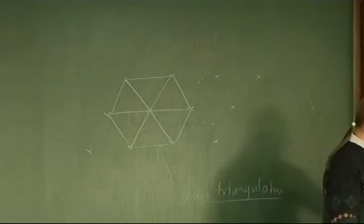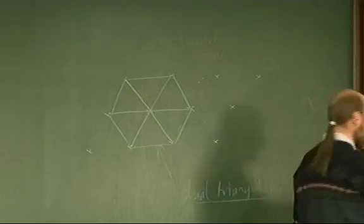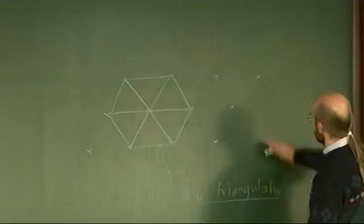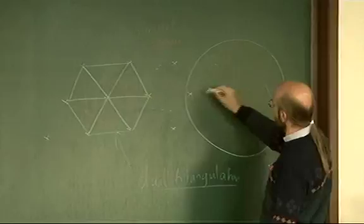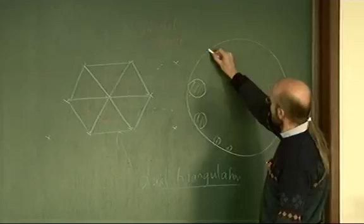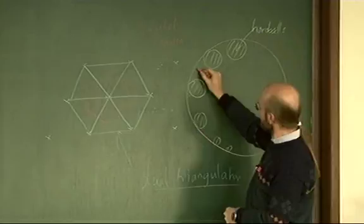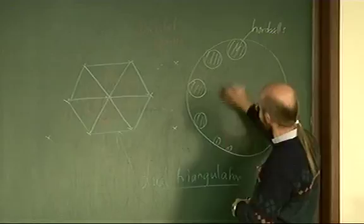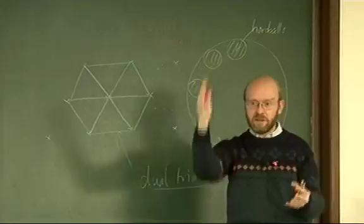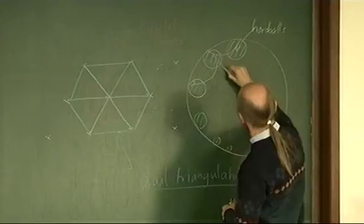Now imagine the same sort of thing in hyperbolic space. You start with a bunch of points, but now you move them out to the sphere at infinity. You can take horroballs centered at points on the sphere at infinity. Lifting the cusps of the manifold gives these horroballs in hyperbolic space. You take bisecting hyperplanes between them, which gives regions and then a canonical triangulation.